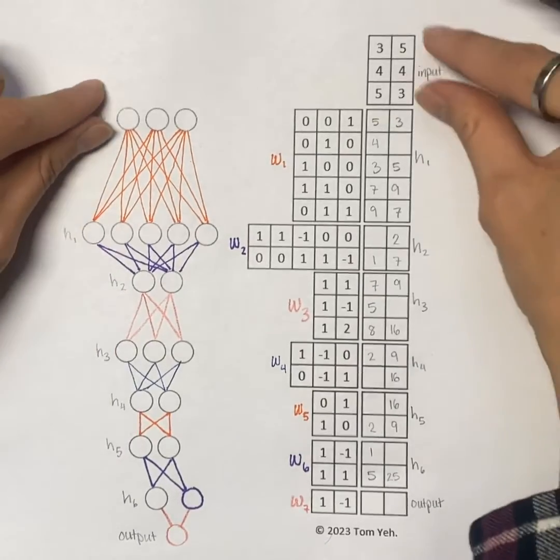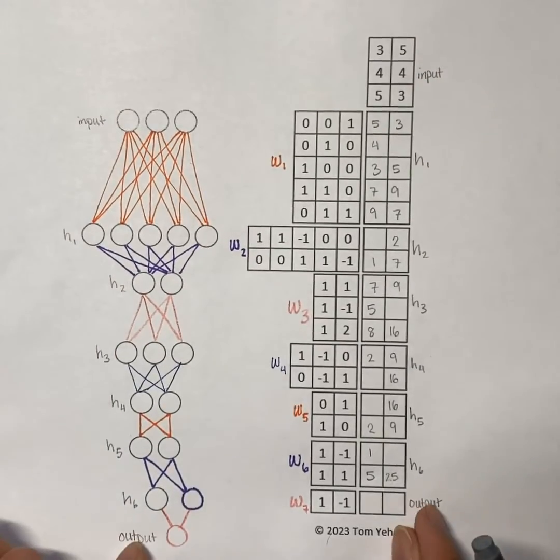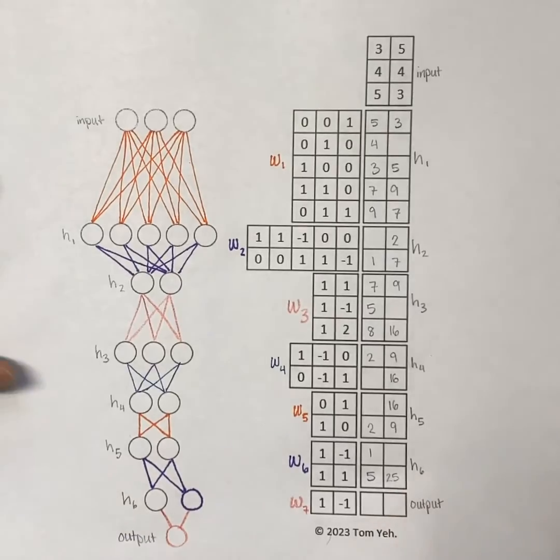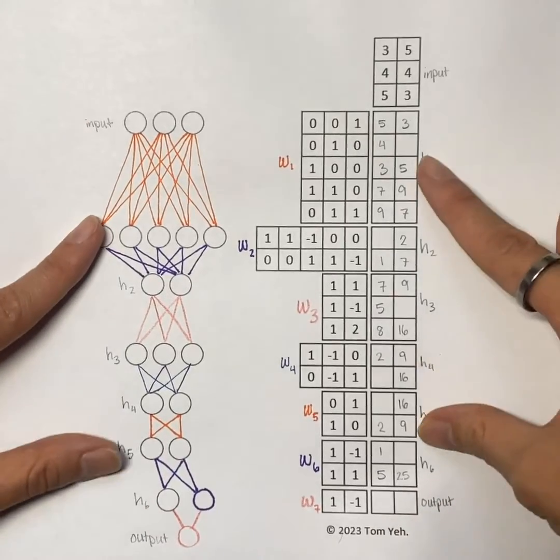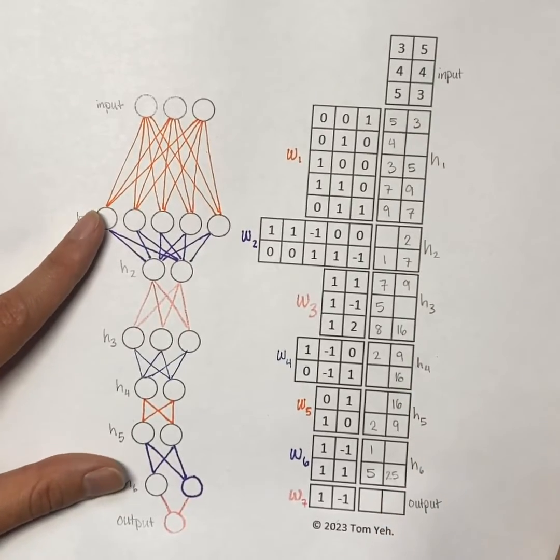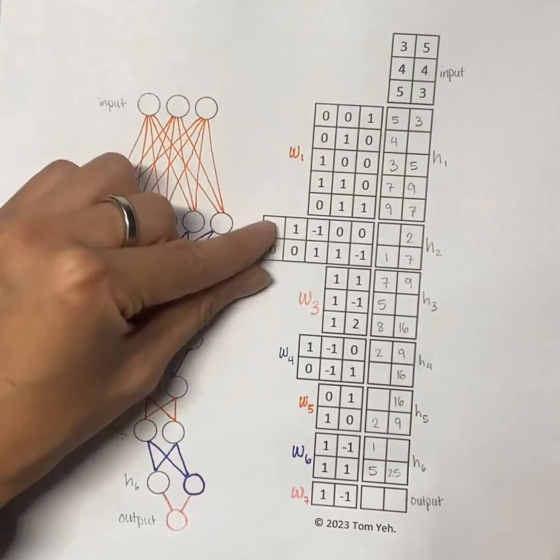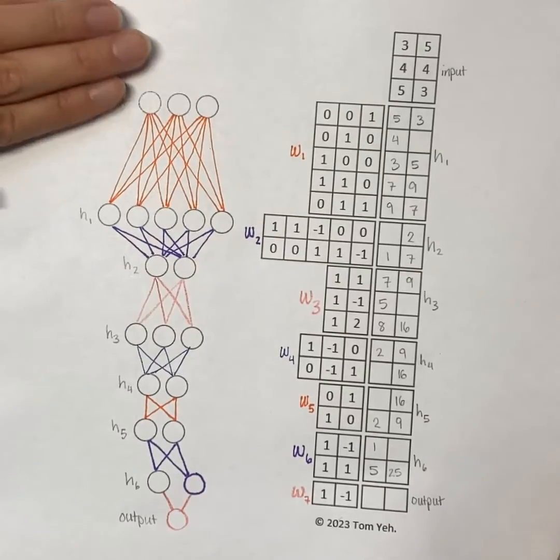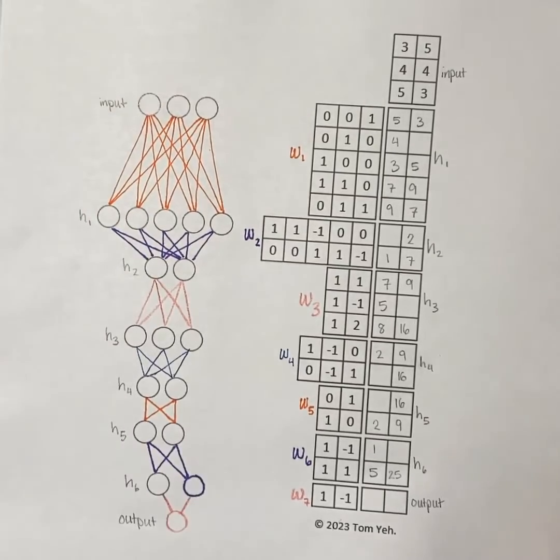We can see that we have the input matrix here, and the output matrix here. We have six hidden layers, which just represent layers in between the input and output matrix, and we talked before about how we can stack our matrices on top of each other to calculate all the way through our hidden layers.